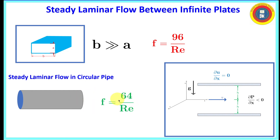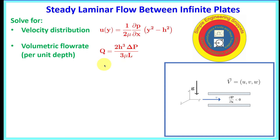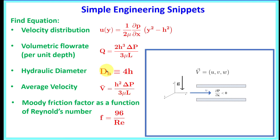This result — f equals 96/Re — is valid for rectangular geometry where width is much greater than height. Compare this to circular pipe where f equals 64/Re, which is what's plotted on the Moody diagram. Be careful not to apply that circular pipe value to rectangular geometry. A future video will cover how to properly handle hydraulic diameter for laminar versus turbulent flow. That wraps up the problem — hope you found it useful. Please like and subscribe.